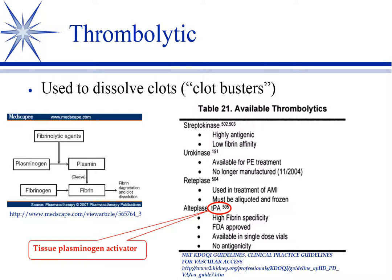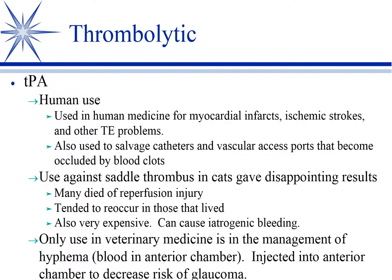TPA is a true clot buster. Its main use in human medicine is for myocardial infarct, heart attacks, ischemic strokes, and possibly other thromboembolic events like pulmonary thromboembolism — though the data supporting that is somewhat controversial. For heart attacks and ischemic strokes, they are very useful if given in time. There is a time factor where these have to be given before permanent damage occurs, so getting to a good emergency room quickly is important.